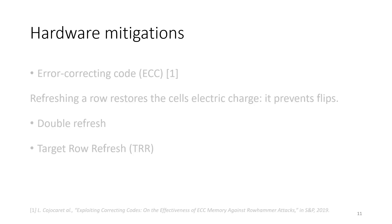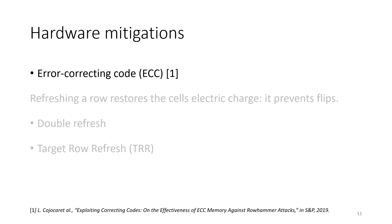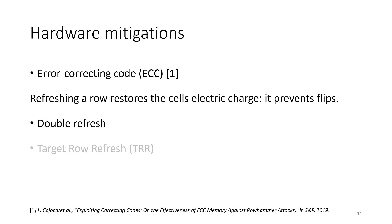Fortunately, over the years many rowhammer mitigations have been proposed. Among those, some hardware mitigations are used in practice. The first hardware mitigation uses error-correcting codes; ECC solutions have been already investigated in previous work. Other solutions exploit refresh commands, since refreshing a row restores the cell's electric charge and prevents bit flip occurrence. For example, some systems enable a double refresh frequency. However, such solutions have been shown to not be totally effective in mitigating rowhammer. In this talk, we focus our attention on the so-called target row refresh.